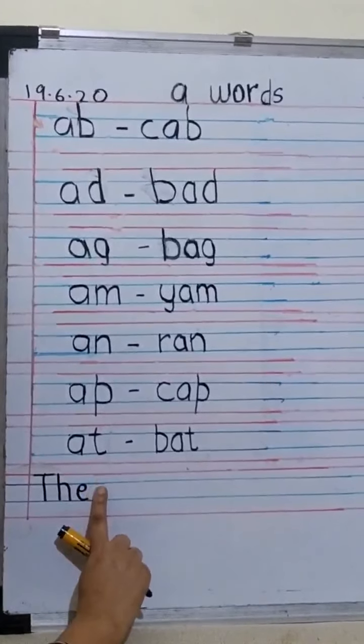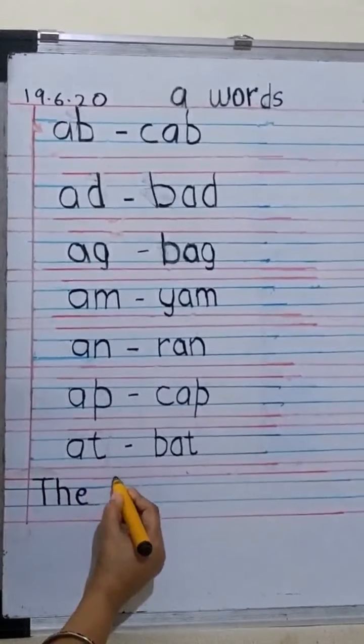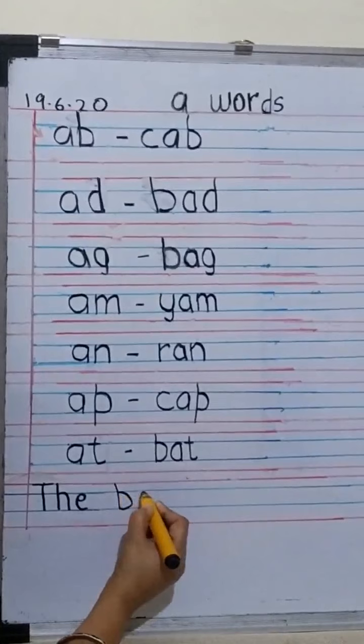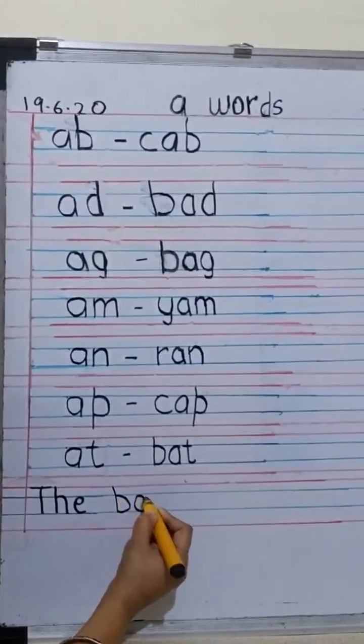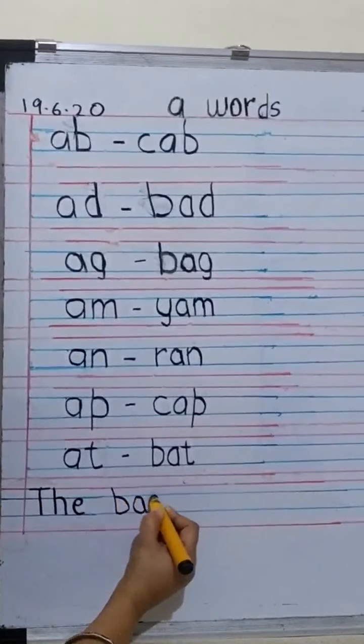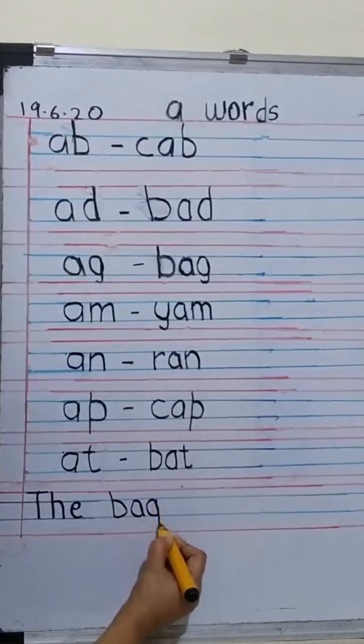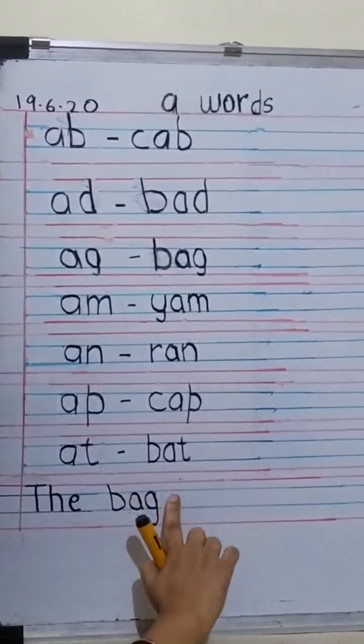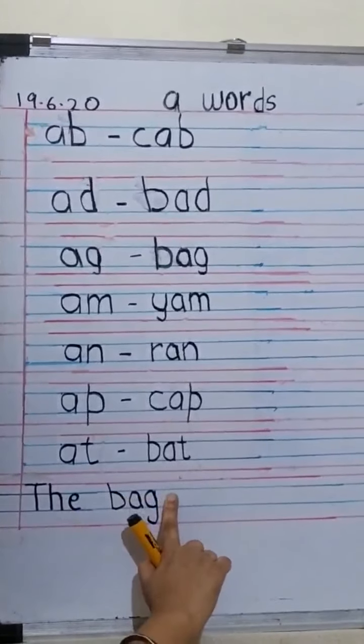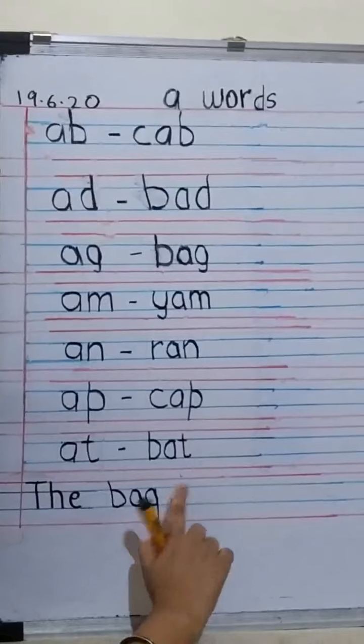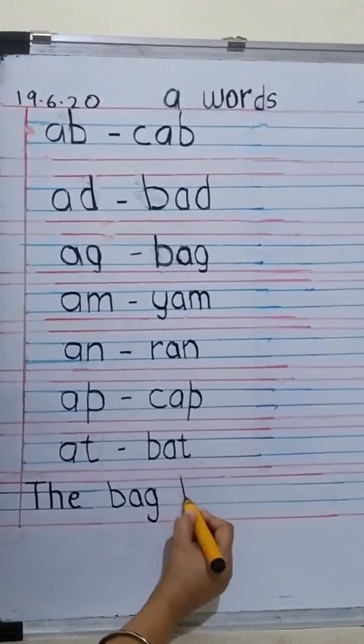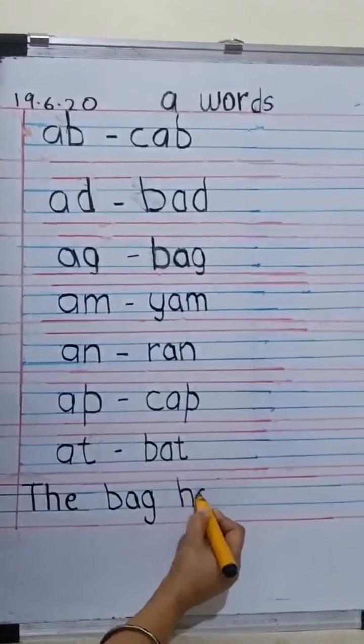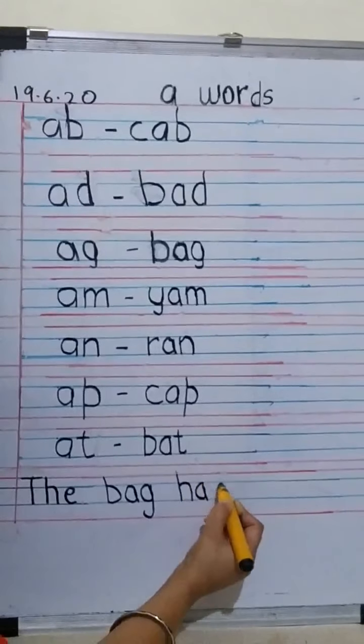Then we give another one finger space and we write a bag. That is a B, A, and a G. Yes? The bag. Again one finger space everybody. I hope you are giving your one finger space. Has. H, A, and an S.